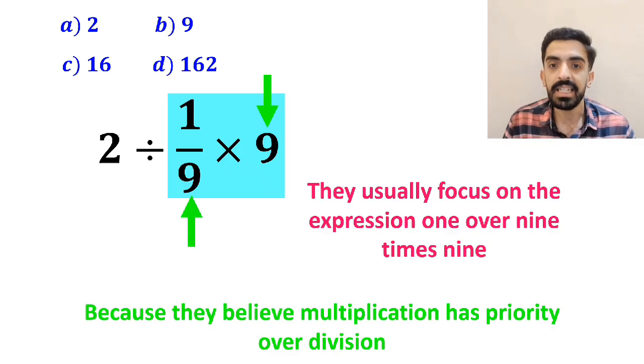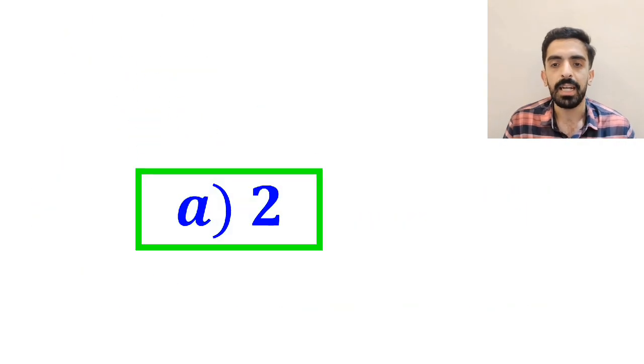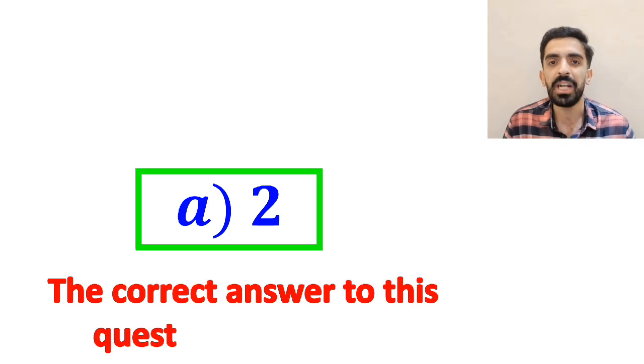As you can see in the image, they very easily cancel out the two 9s, and write this expression as 2 divided by 1, which ultimately gives them the answer 2. And without any hesitation, they quickly say that the correct answer to this question is option A.